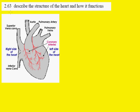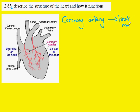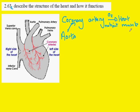GCSE Biology 263, Section C. Here we're looking at the blood supply to the heart via the coronary artery. This is the blood vessel which supplies heart muscle. The coronary artery is a branch of the aorta, so the aorta leaves the heart and branches to form the coronary artery, which takes oxygen and nutrients such as glucose to the heart muscle.